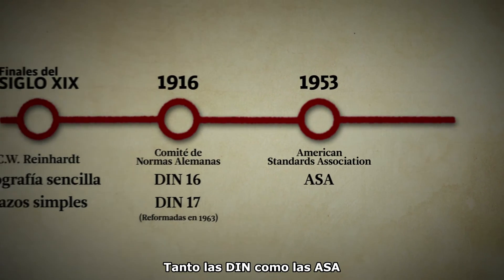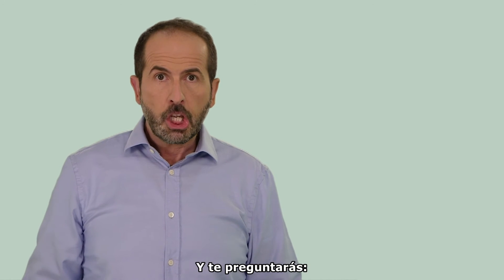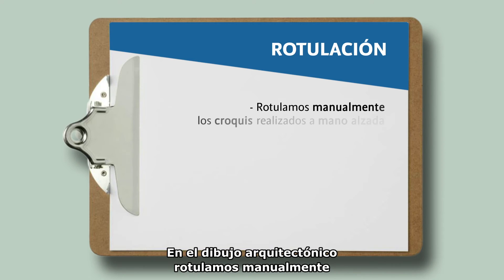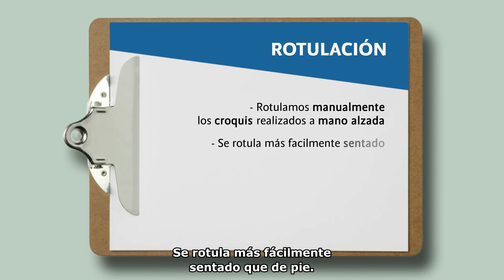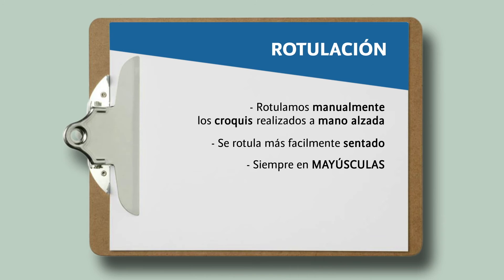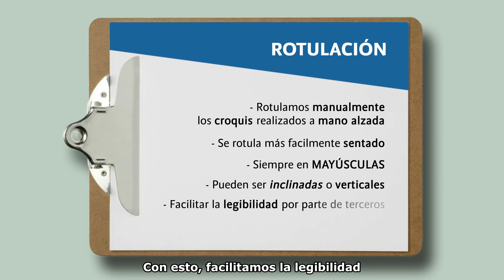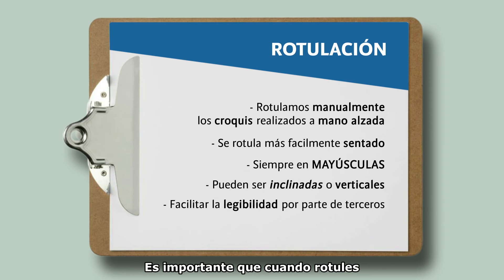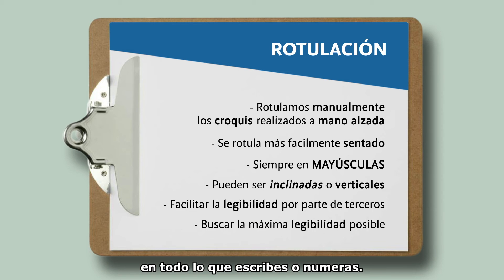Both the DIN and ASA standards seek to standardize as much as possible how to label on a plan. And you may wonder: how do I properly label an architectural drawing? In architectural drawing, we manually label those sketches made freehand. They are labeled more easily sitting than standing. We always use uppercase letters, which can be inclined or vertical. This facilitates the legibility of everything we write for others. It is important that when you label, you always seek maximum legibility in everything you write or number.